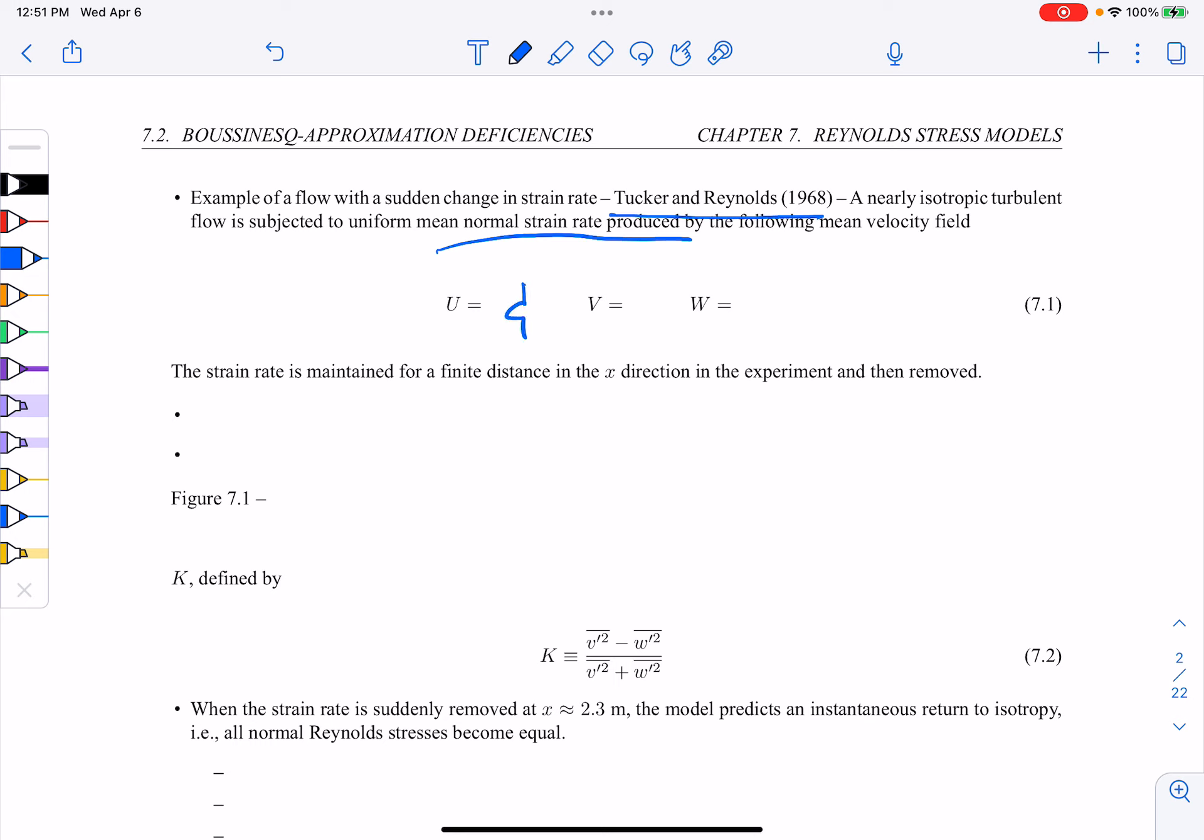Well, u is a constant z-velocity. V is negative a constant times y coordinate. And w might be that same constant times z. A here is a constant strain rate.